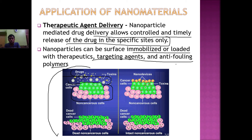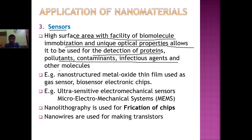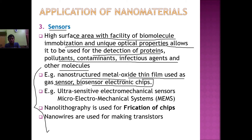Moving on to sensors: the high surface area, facility of biomolecule immobilization, and unique optical properties of nanomaterials allow them to be used for detection of proteins, pollutants, contaminants, infectious agents, and other molecules. Examples include nanostructured metal oxide thin films used as gas sensors, biosensors, and electronic chips. We also have ultra-sensitive electromechanical sensors and micro-electromechanical sensors (MEMS), nanolithography for fabrication of chips, and nanowires for making transistors.